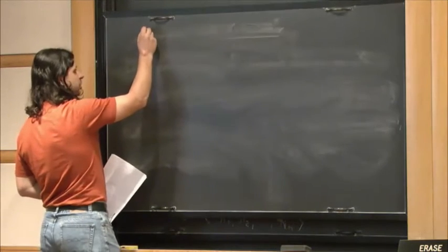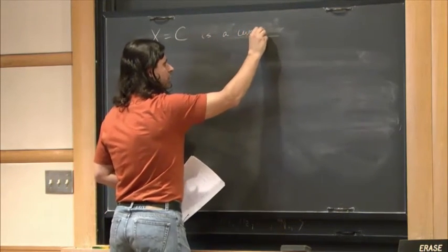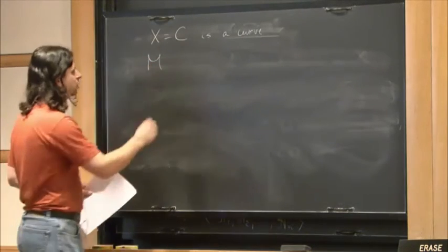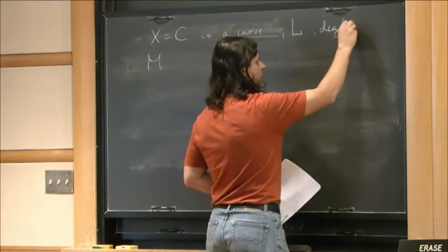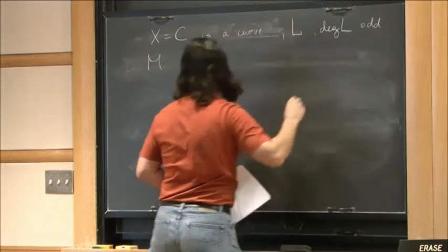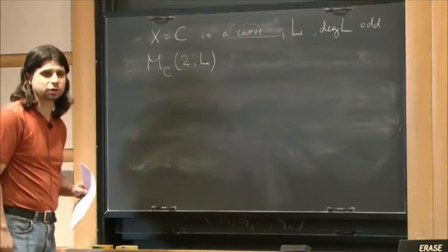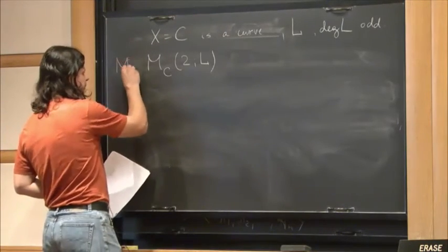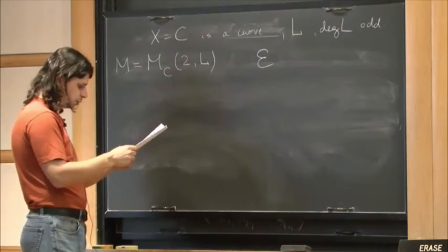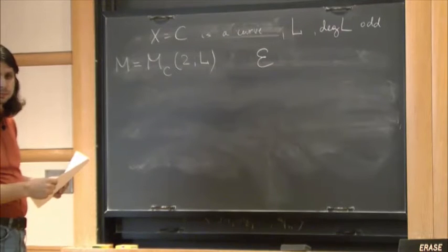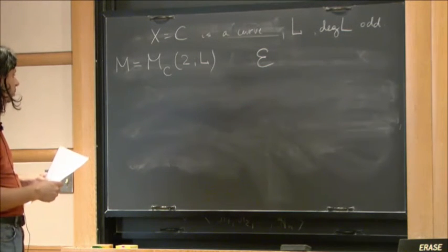The main result today addresses the case when X is a curve. In this case, a natural moduli space to consider is the following: fix a line bundle L of odd degree on the curve, and consider the moduli space M of rank-2 vector bundles with determinant L. This kills the differential forms. We have the universal vector bundle E, and we can carry out all the constructions.